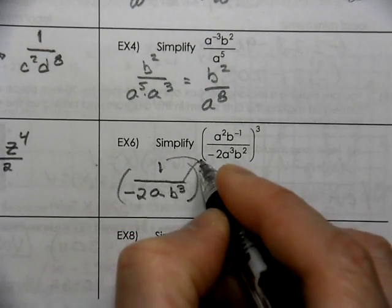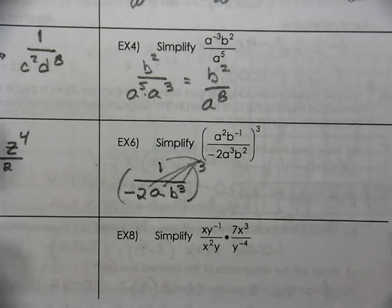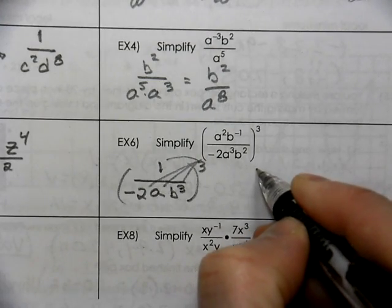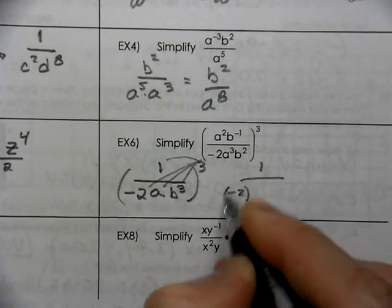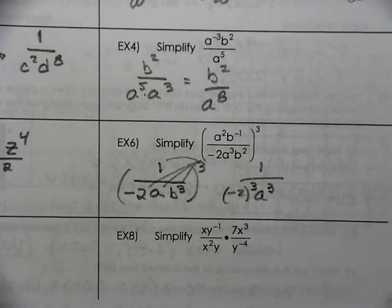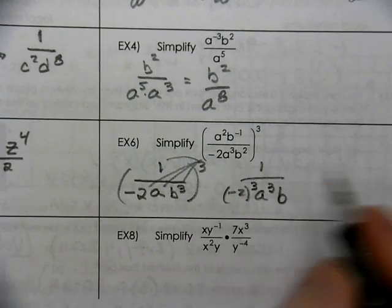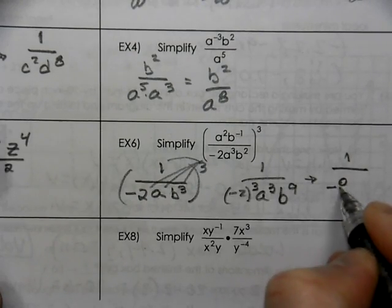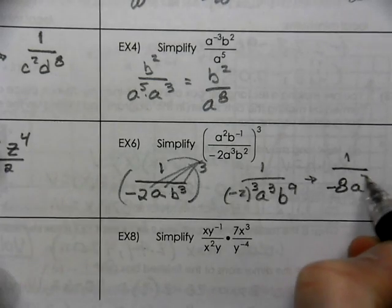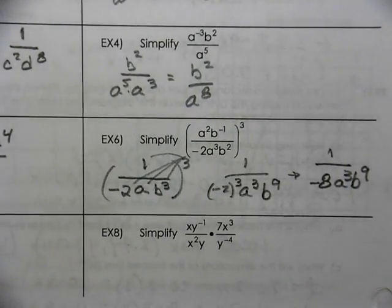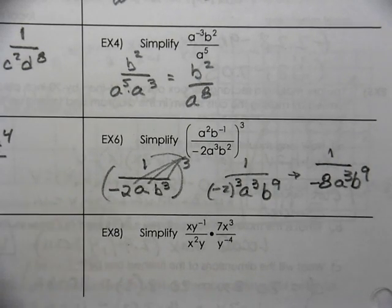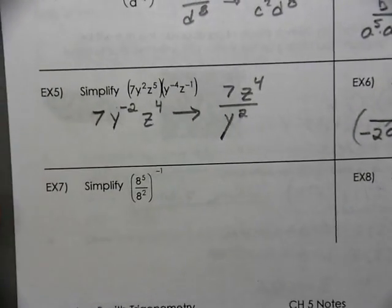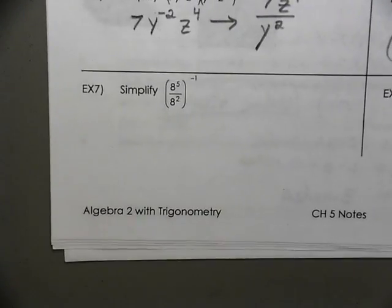We would distribute this exponent to every term. That gives 1 to the third, which is 1; negative 2 to the third; a to the third; and b to the 3 times 3. Negative 2 times negative 2 times negative 2 is negative 8, giving us negative 8 a cubed b to the ninth. Notice how all of these have work to be shown — you shouldn't produce these complicated simplifications without showing your work. Demonstrate your understanding; it's going to help you on quiz day.